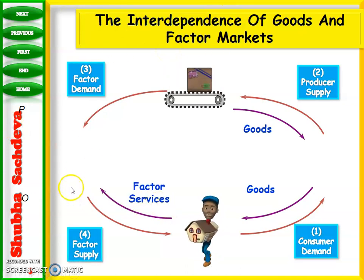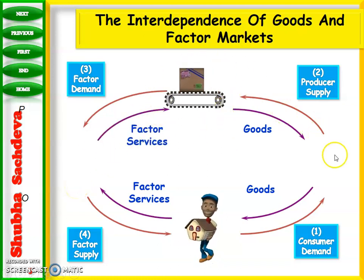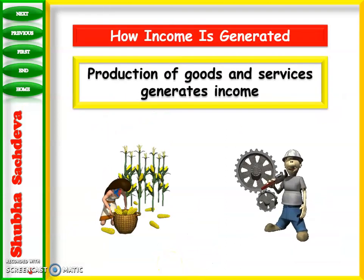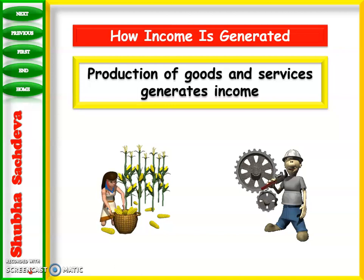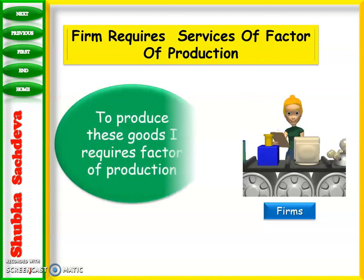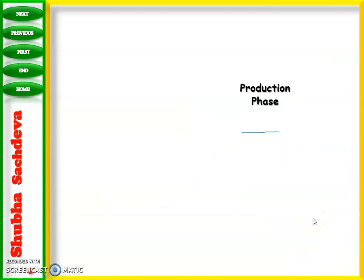The household is making factor services available — land, labor, capital, and entrepreneurs — and in return goods will come back to the household. When we produce goods and services, income is always generated. The firm needs factors of production to produce goods, so the producer requires factors of production to run the firm.